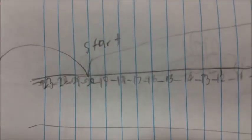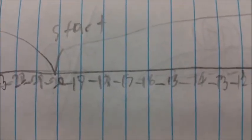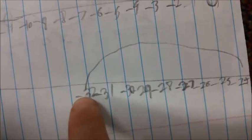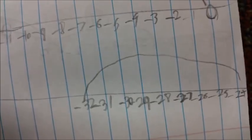Negative 20 will be your starting point right here. What you're going to do is you're going to go back 12 degrees because it drops 12 degrees. When you're dropping, you're subtracting, so you're going to go back 12 degrees, which would be -32. So your answer is negative 32.